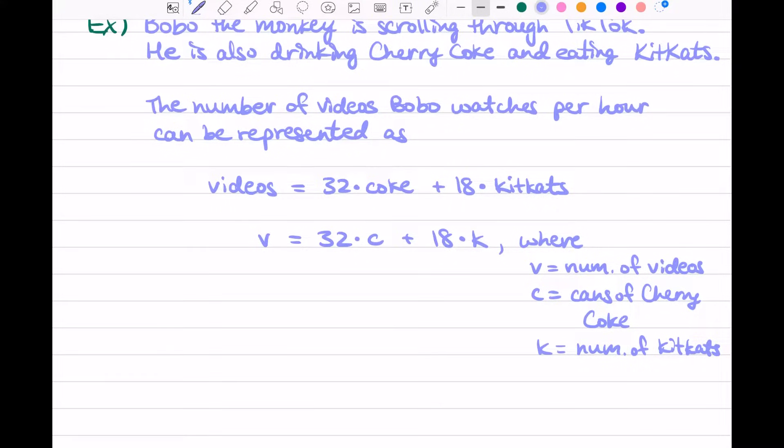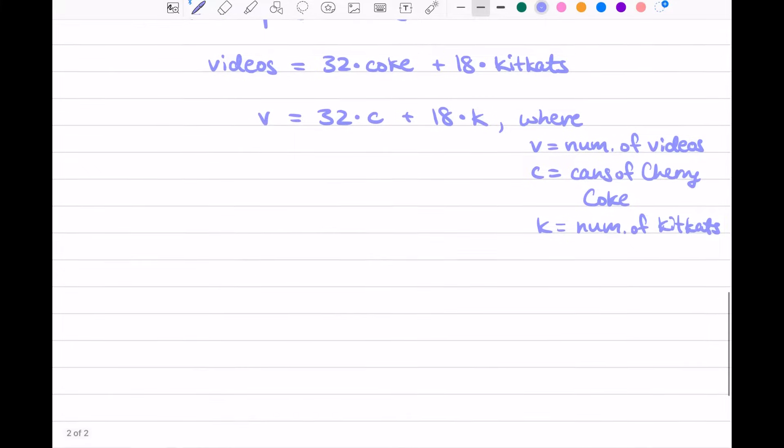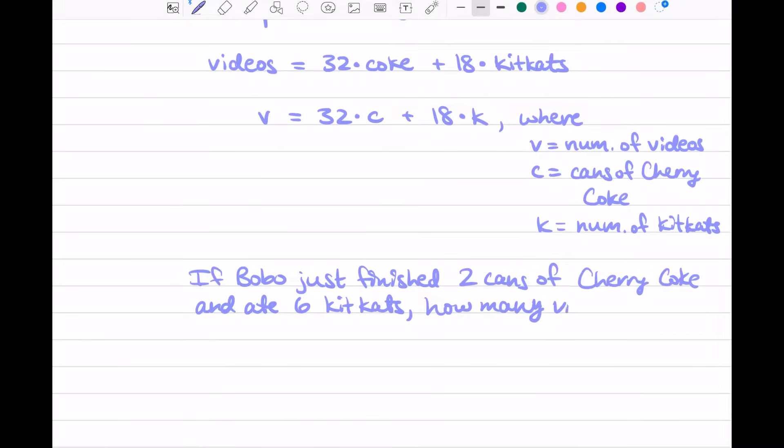So, you're given all of this information, and I ask you: if Bobo just finished two cans of Cherry Coke and he ate six Kit Kats, how many videos will he watch in the next hour?